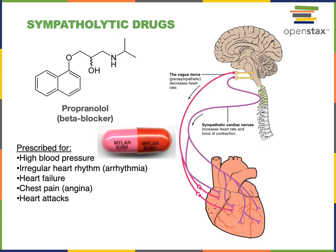One of the clinical uses of propranolol is to decrease the heart rate as a way of lowering blood pressure and treating abnormal heart rhythms — arrhythmia. Propranolol is one of the most commonly prescribed medications, commonly used to treat hypertension, or high blood pressure.